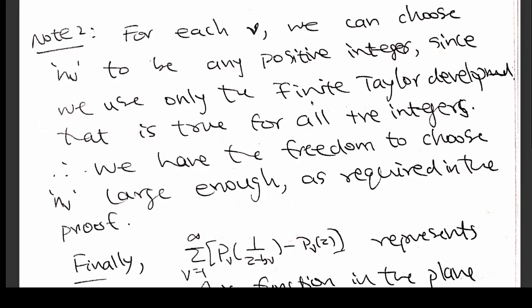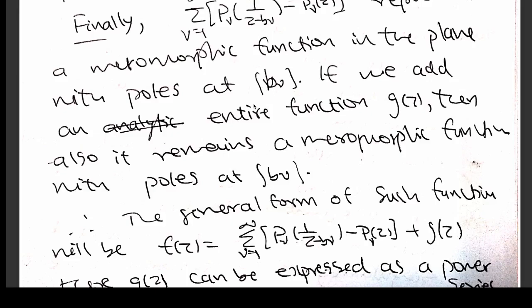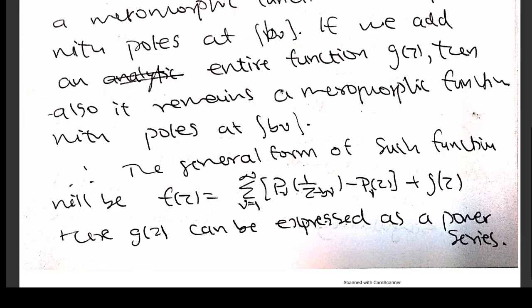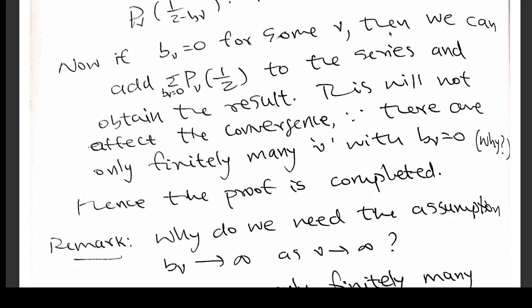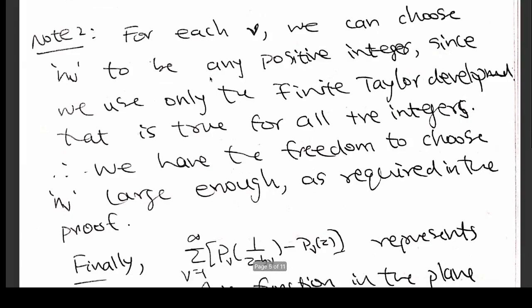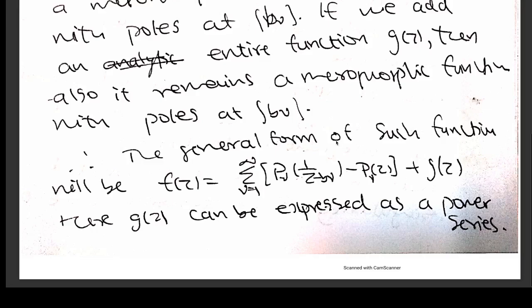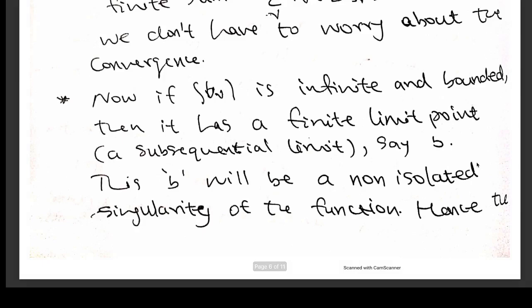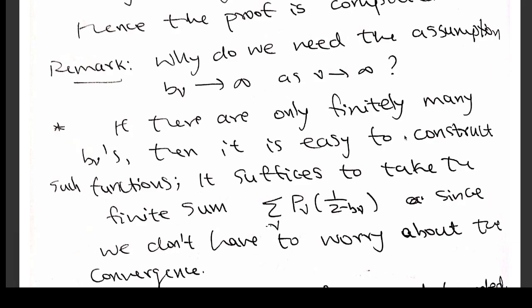This represents a meromorphic function in the plane with poles at b_ν. If b_ν equals 0 for some ν, that will not cause any trouble, because if b_ν = 0 for some ν, there will be only finitely many such things. You can consider the corresponding p_ν of 1/z and add them — that will not affect the convergence of the series. The general form will be this series plus some arbitrary analytic function. You can add any arbitrary analytic function; the property will not change. It will remain meromorphic with poles at b_ν. That is a proof of the Mittag-Leffler theorem.